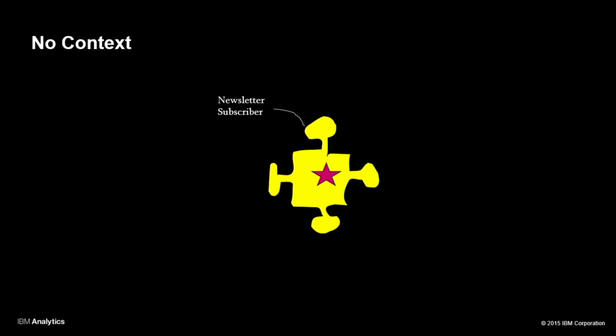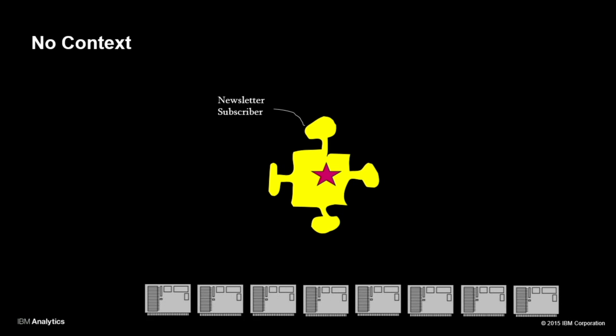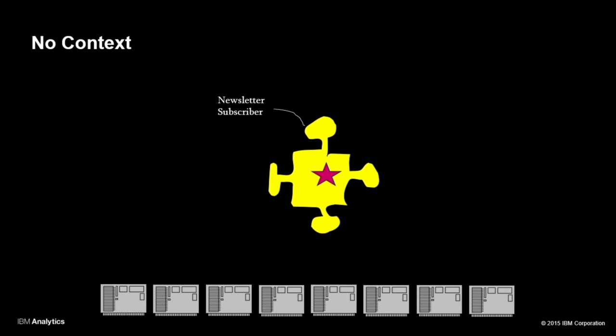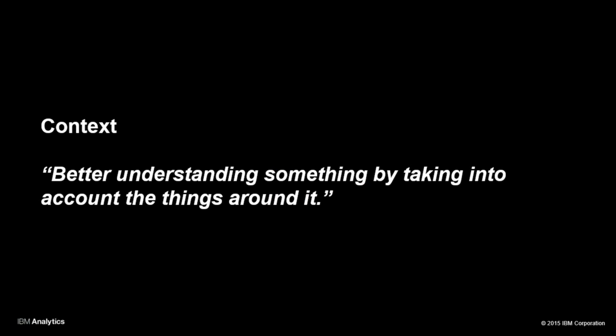I've been mainly working on something called context computing. And what is that? Well, here's what that is. Let's say your organization has somebody subscribed to a newsletter, and all you've learned is an email address. You could use an infinite amount of compute, time, and energy. And what are the odds you're going to figure out if this is an opportunity or a risk? The problem is it lacks context. And when I say context, I mean: to better understand something by taking into account the things around it.